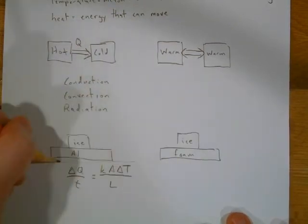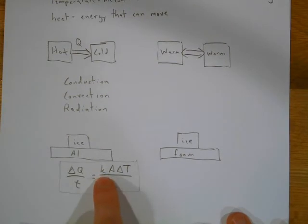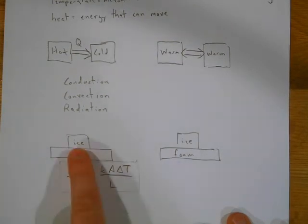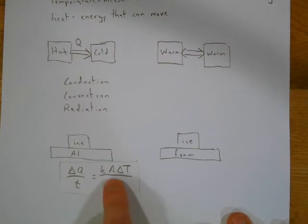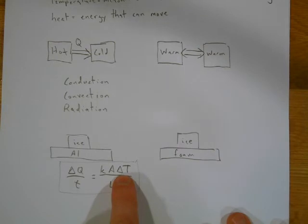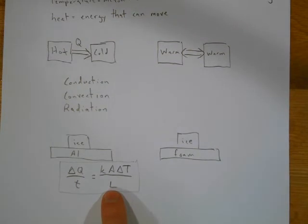This is explained by the thermal conductivity equation, which is on your formula sheet. The rate of heat transfer equals k × A × ΔT / L. Here, k is the thermal conductivity — aluminum has a larger k than foam, meaning heat transfers better through aluminum. A is the contact area, ΔT is the temperature difference, and L is the length.